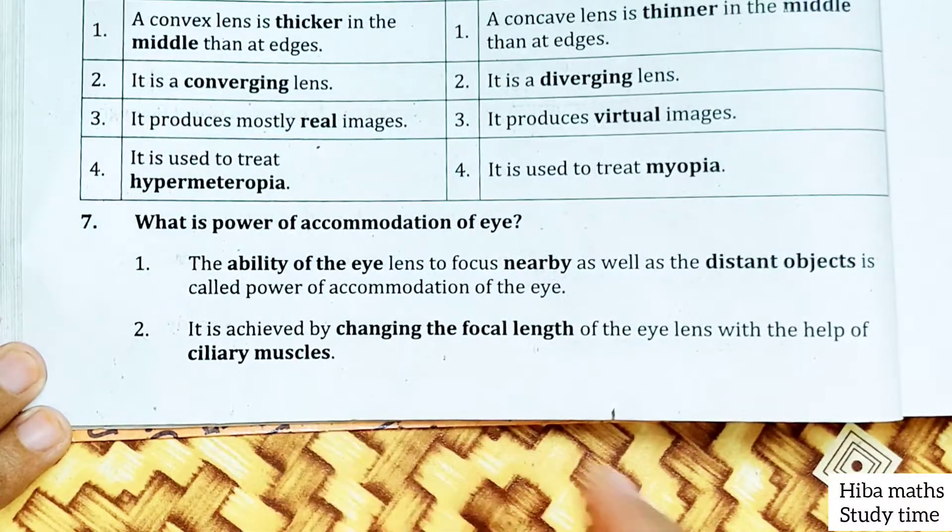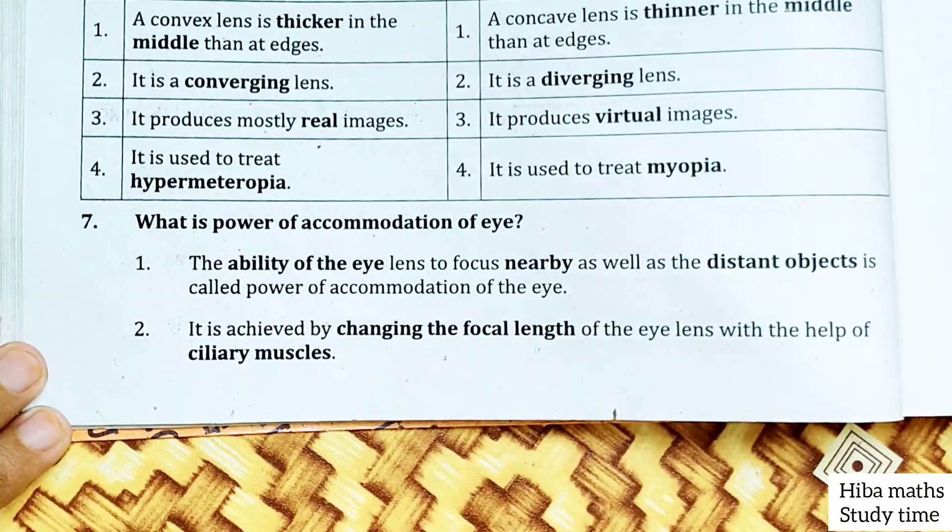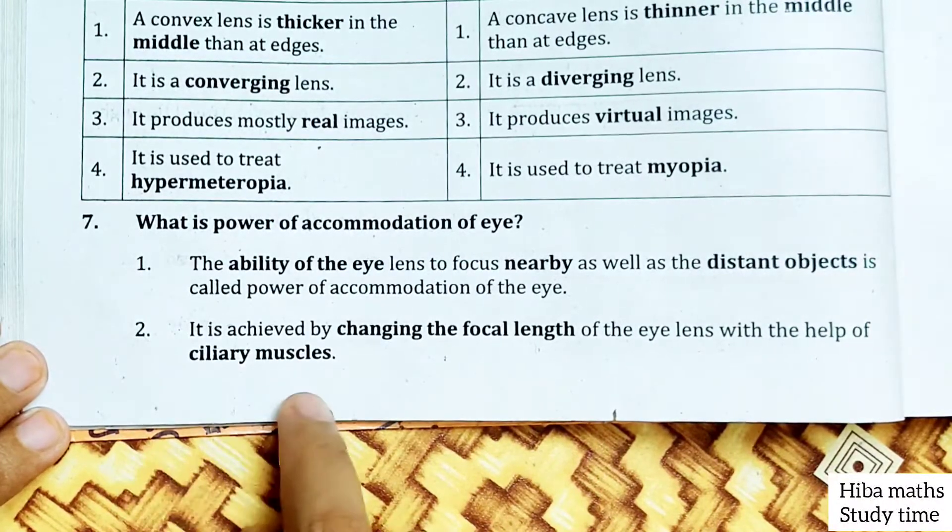It is achieved by changing the focal length of the eye lens with the help of ciliary muscles. This is one mark. Ciliary muscles are able to change the focus.